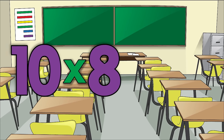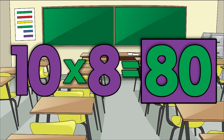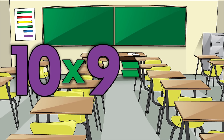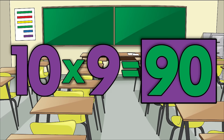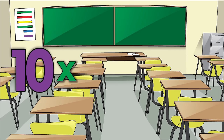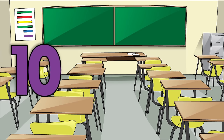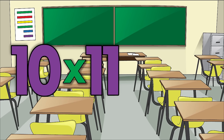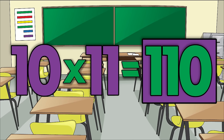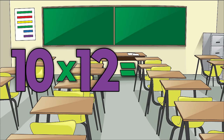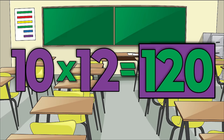Ten times eight is eighty. Ten times nine is ninety. Ten times ten is one hundred. Ten times eleven is one hundred ten. Ten times twelve is one hundred twenty.